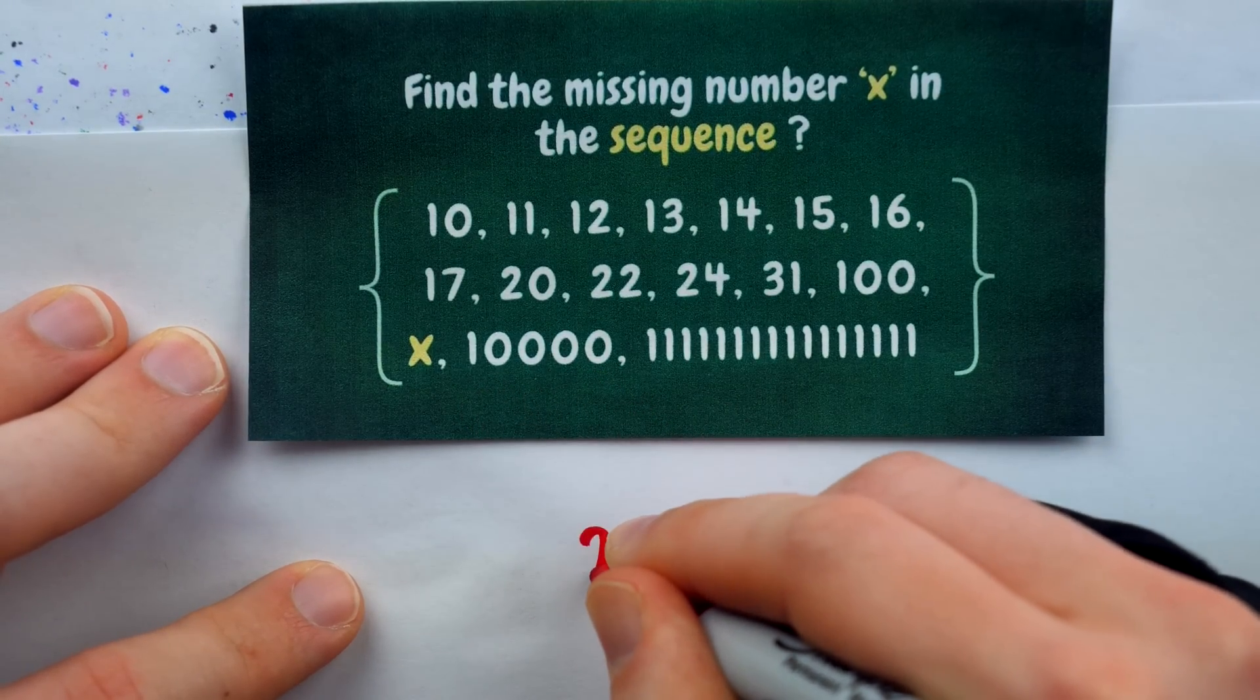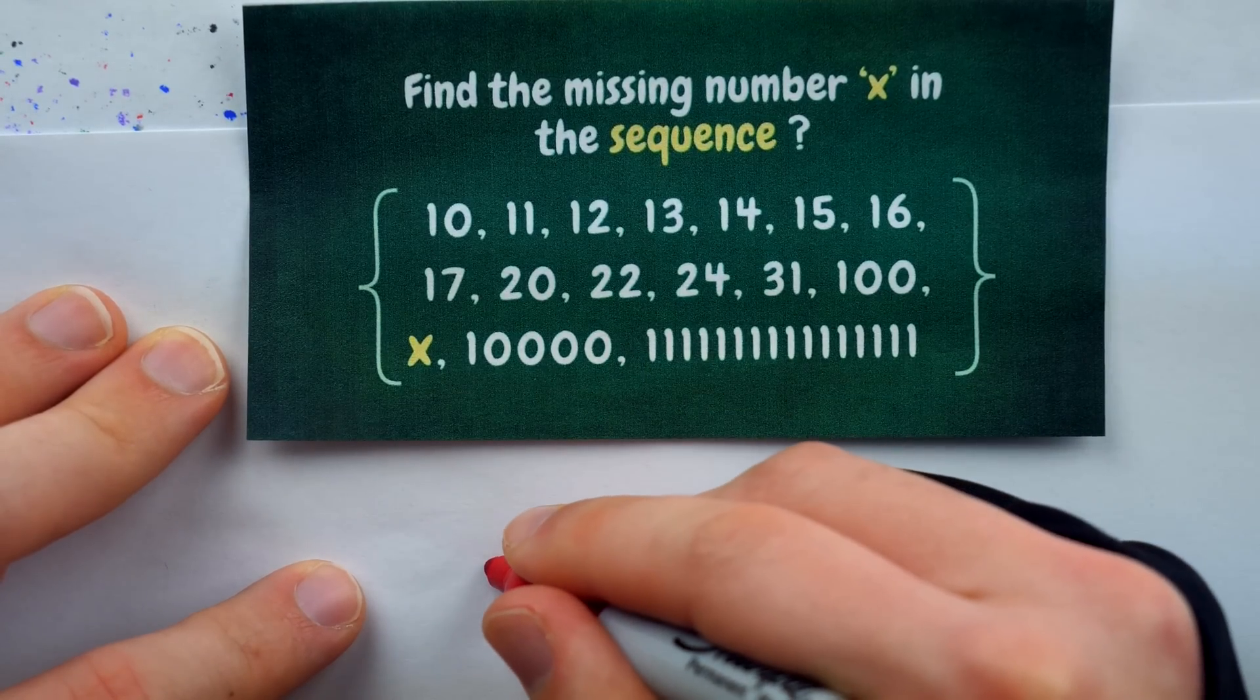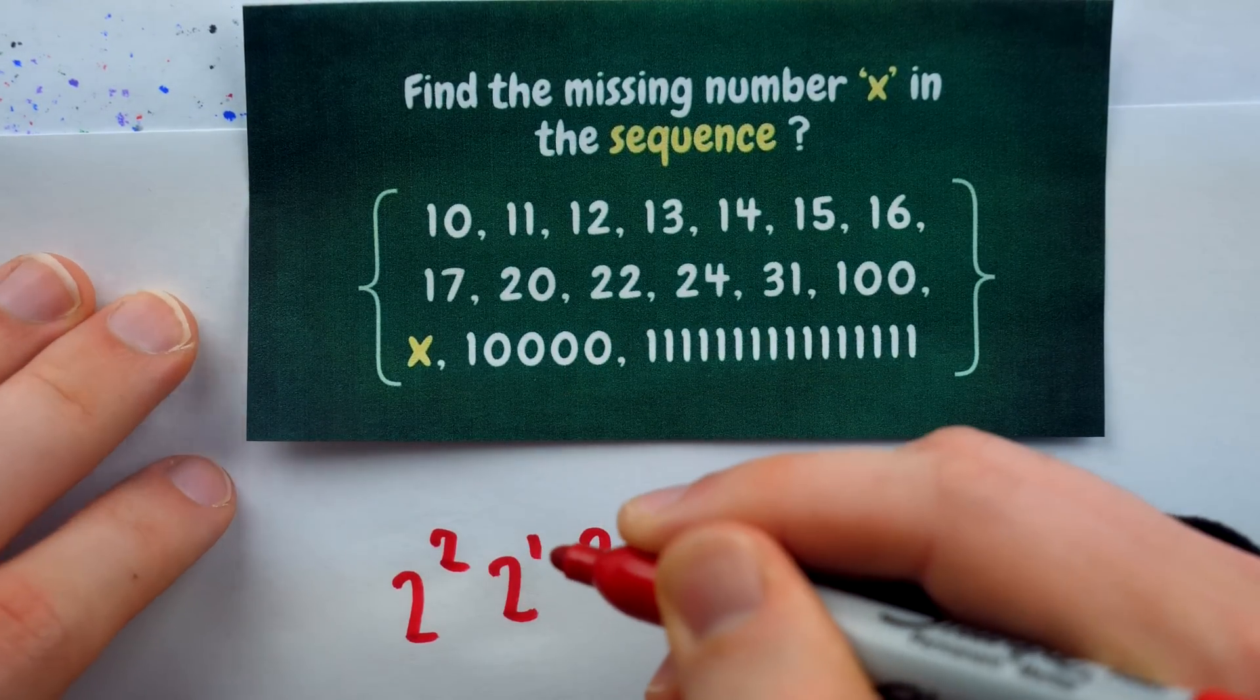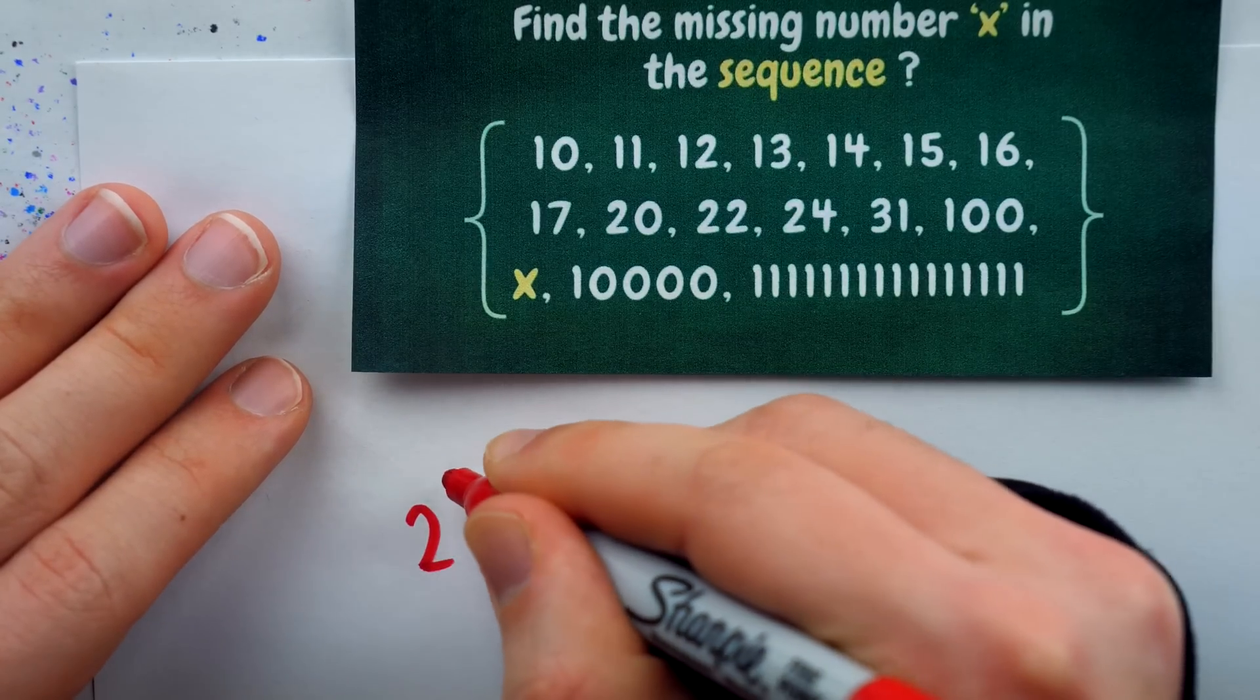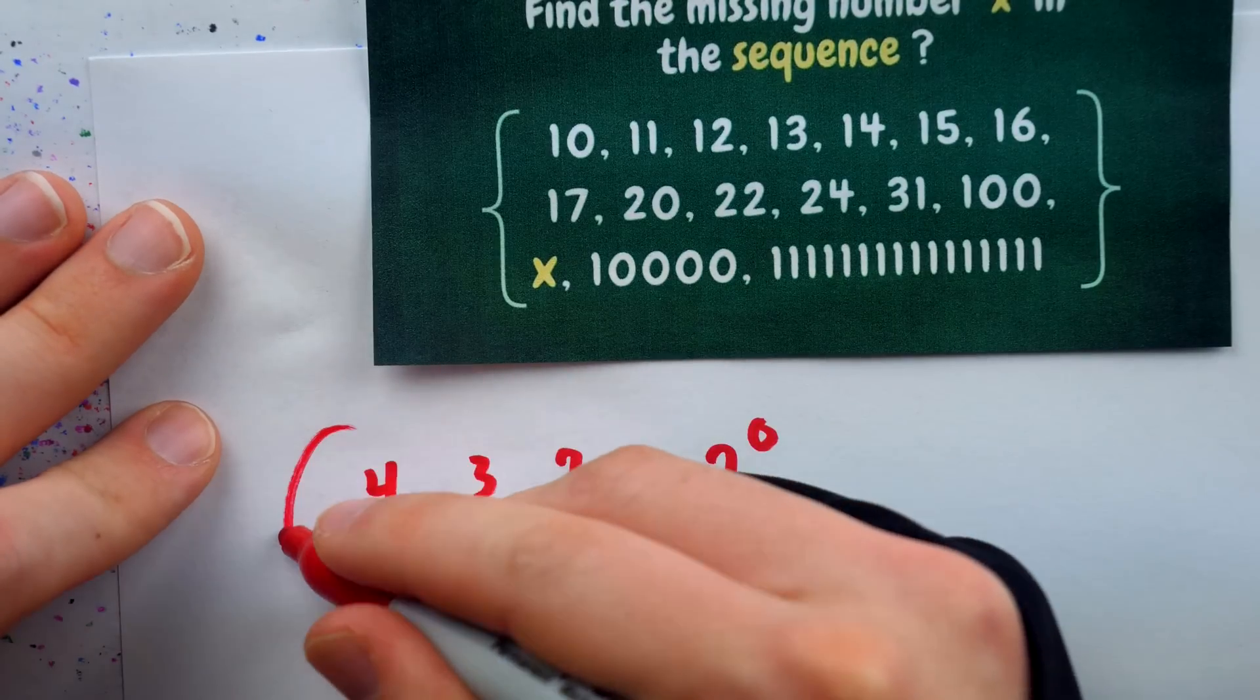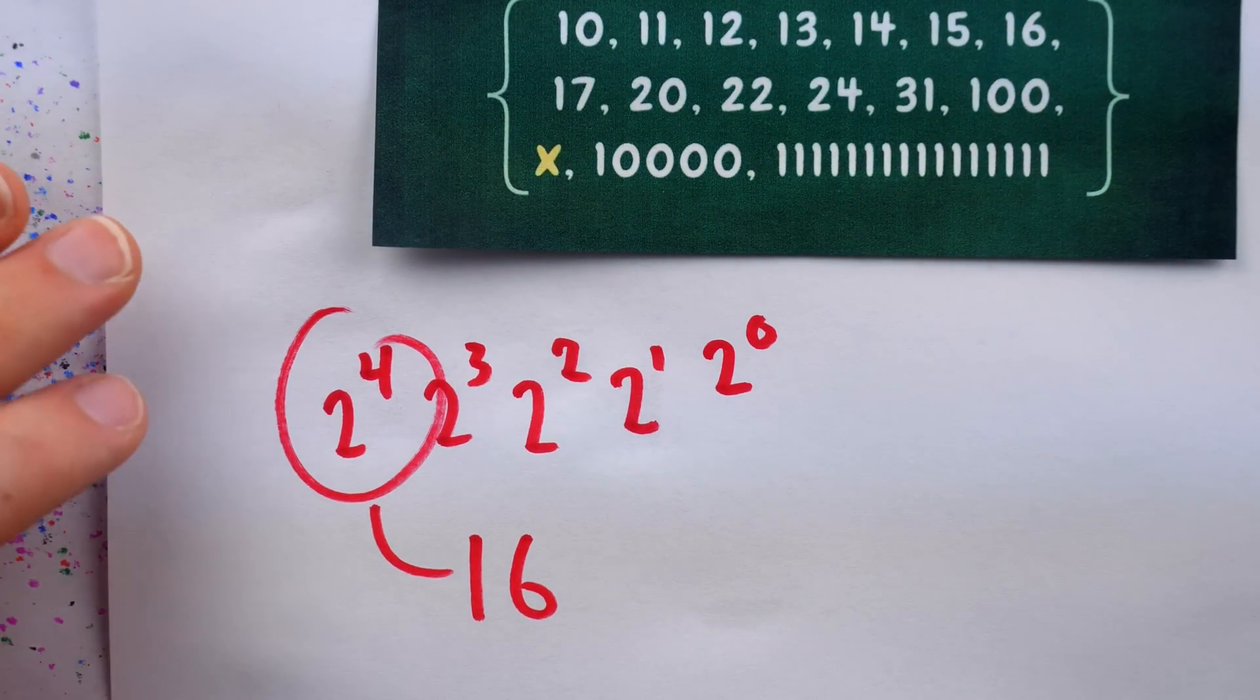The first 0 is 0 copies of 2 to the 0, then 0 copies of 2 to the 1, then 0 copies of 2 to the 2, then 0 copies of 2 to the 3, and that 1 at the beginning is 1 copy of 2 to the 4. 2 to the 4, of course, is 16.